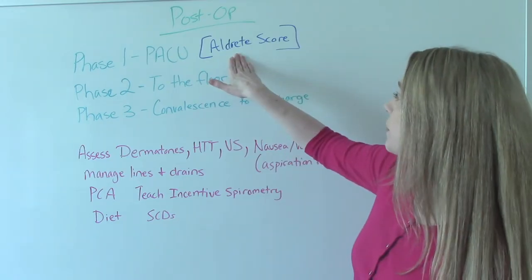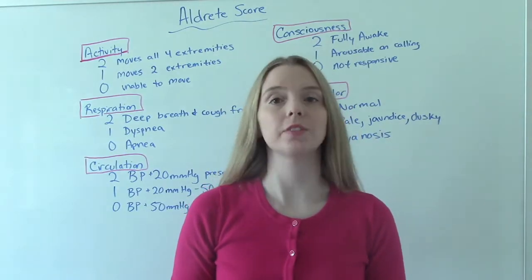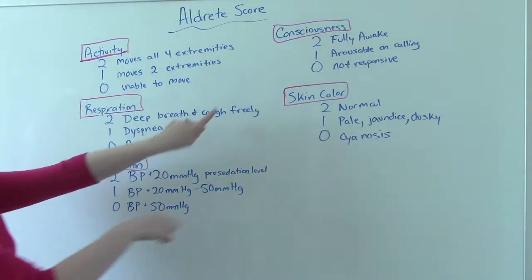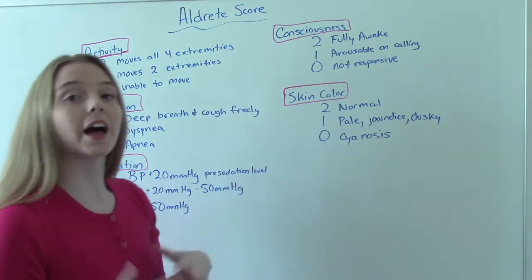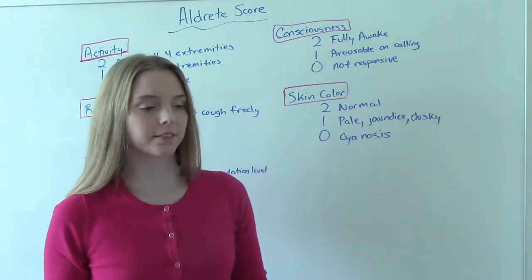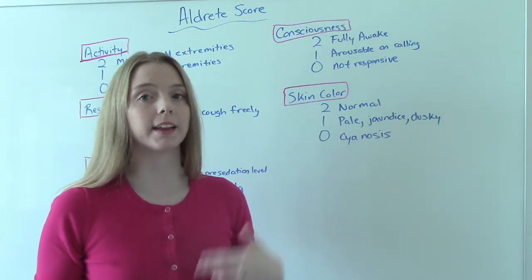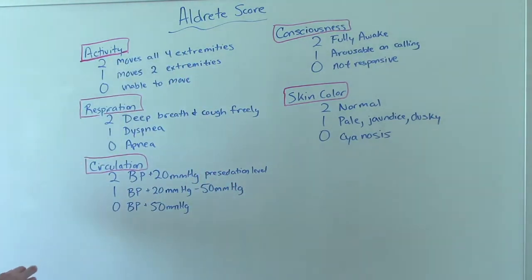Now let's talk a little bit more detail about an Aldrete score. Now let's talk about how to do the Aldrete score. So as you can see, it's five categories here, and they are scored 0 to 2. So the highest you could get is a 10. In order to be discharged from the PACU, you should get anywhere between 8 to 10. So 8, 9, or 10, you're good to go. So let's break them down a little bit.